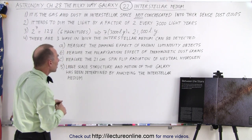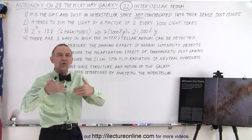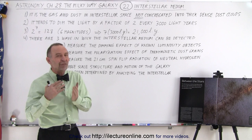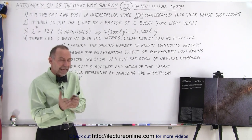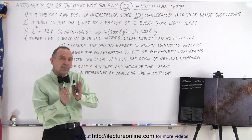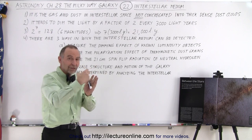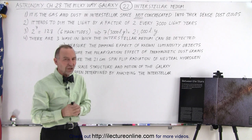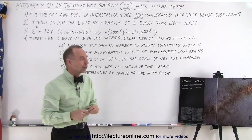Second, we can measure the polarization effect on paramagnetic dust grains. Some dust grains contain certain metals that are affected by magnetic fields. The magnetic field present throughout the galaxy causes those dust grains to align in a particular direction. When light shines through those aligned dust grains, we see a polarization effect. We can measure that polarization and from it determine the amount of dust within that region.